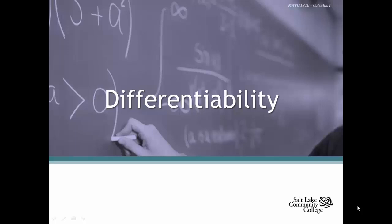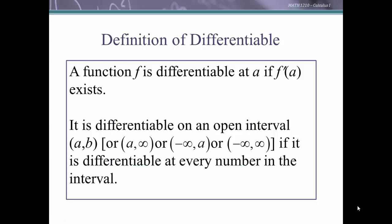Now that we know the definition of derivative and we know that finding a derivative means to differentiate, we can talk about differentiability of a function both at a point or on an open interval. A function f is differentiable at a if f prime of a exists — basically, if the derivative exists at a point it is differentiable there. For an open interval, bounded or unbounded, it is differentiable on that interval if it is differentiable at every number in the interval.